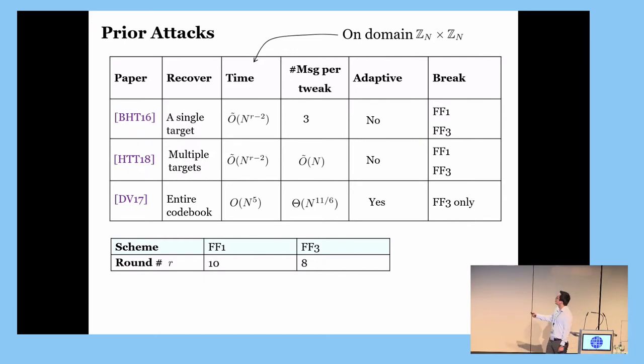So, in a different direction, Durak and Vaudenay exploited the design bug in FF3 to recover the entire codebook. Their attack, however, is very specific to FF3, meaning that it doesn't apply to FF1. Moreover, they need adaptive queries.